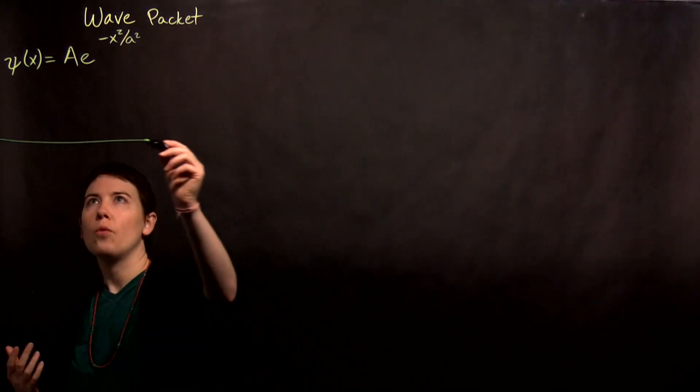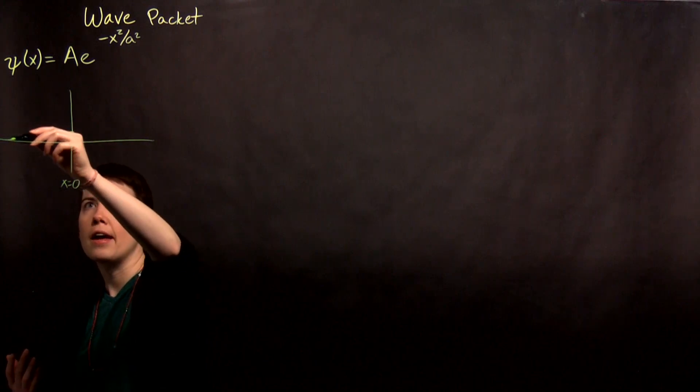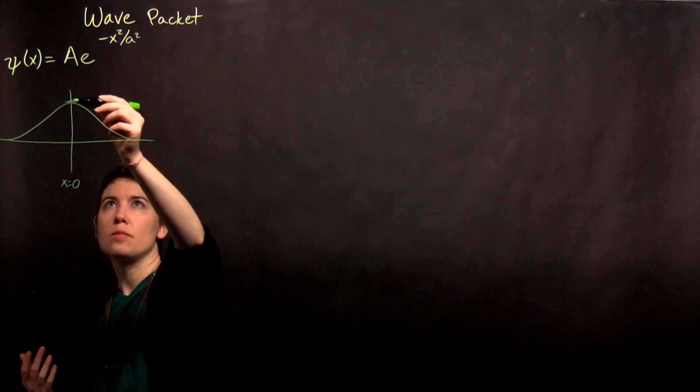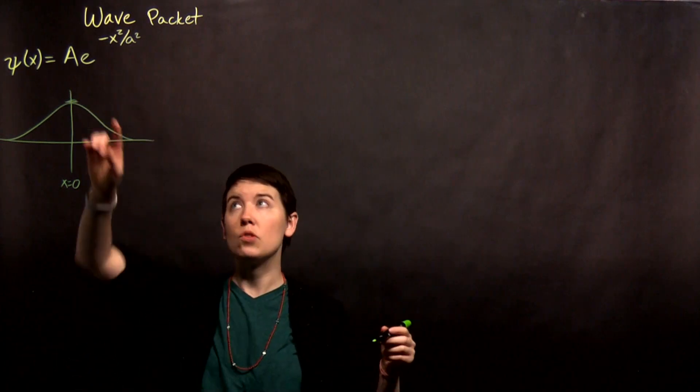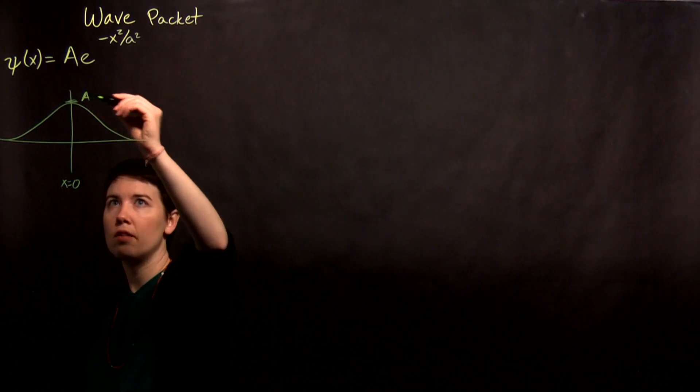So if we think about this, it would be centered on x equals 0, and it looks something like that. And what is this maximum value? Well, that would be where x is equal to 0. e to the 0 is 1, so this would be a. So this is kind of what it looks like.